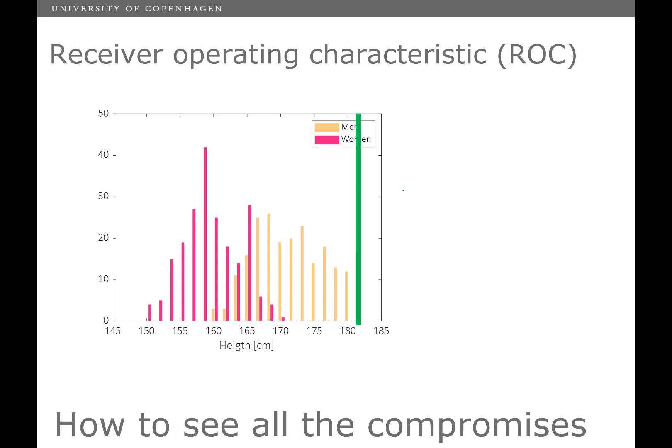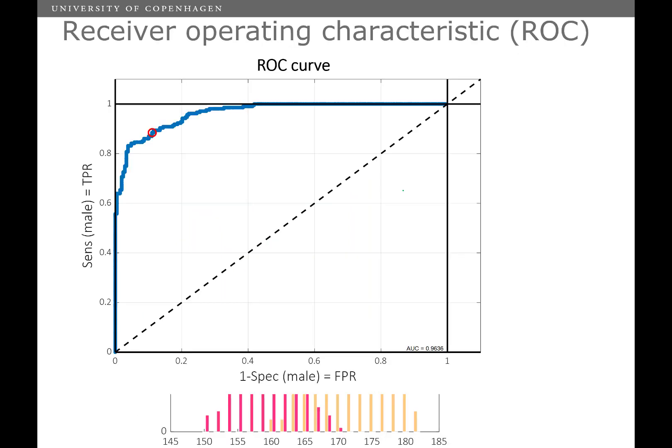And in order to see that compromise that you are trying to reach, we have something which is called a receiver operating characteristic curve, or ROC curve. And basically, it tells you, depending on your choice, what threshold you set, what the relation will be between the sensitivity and the specificity. So, for example, I can easily have a perfect sensitivity. I can capture all the males, but then I'm going to miss out on all the women. And likewise, I can do the opposite. I can get all the women right, but then I'm going to miss out on all the men. And as I move along with my threshold on the height, I will get different compromises between the sensitivity and the specificity.